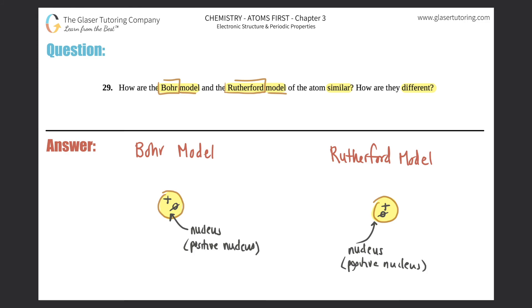Another similarity is that this is where the bulk of the mass was — the atomic mass. They both realized that the nucleus was where the majority of the mass came from in an atom. That's also another similarity.